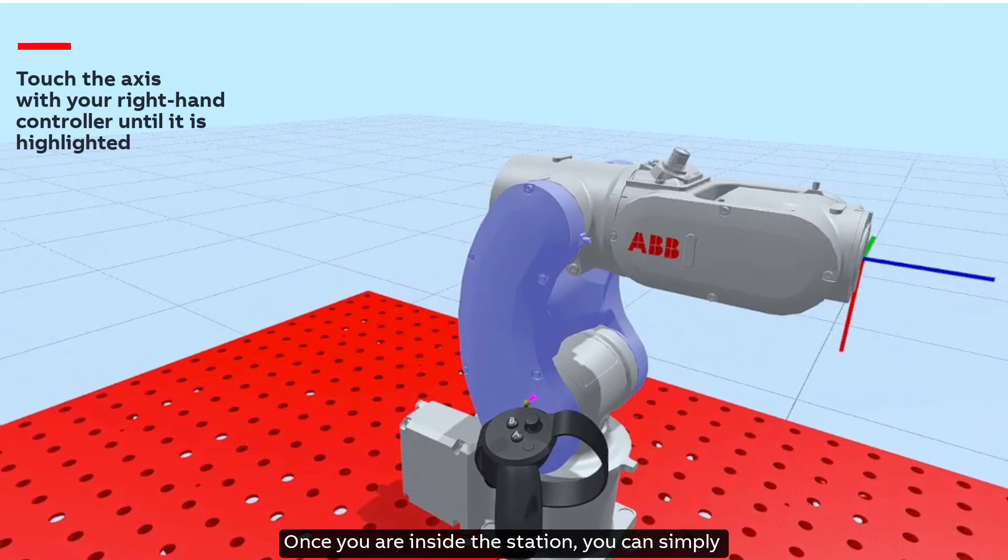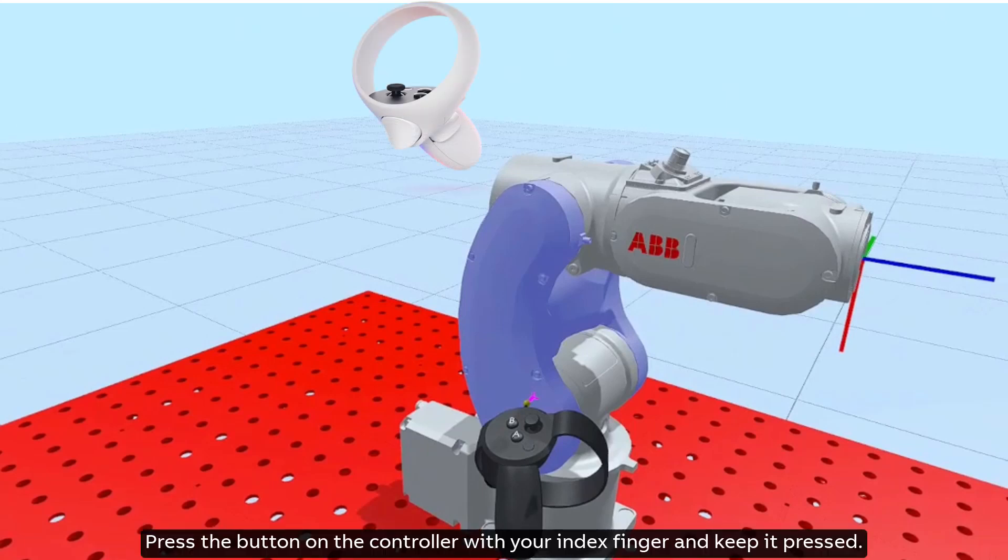Once you are inside the station, you can simply touch the axis with your right hand controller until it is highlighted. Press the button on the controller with your index finger and keep it pressed.